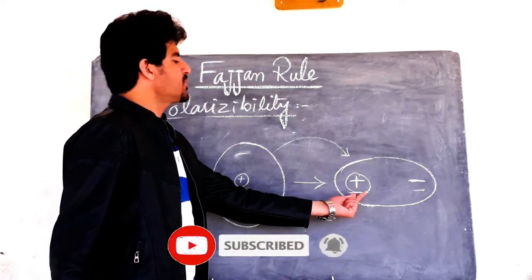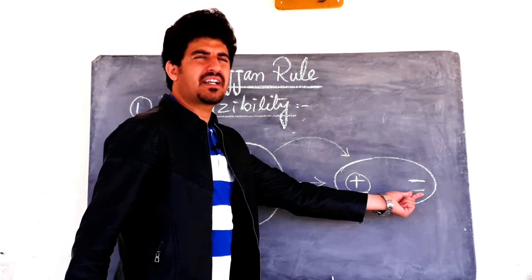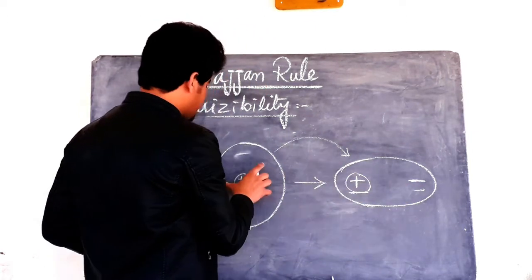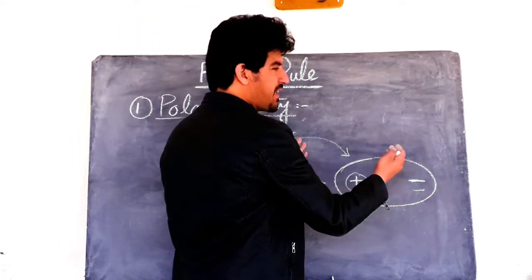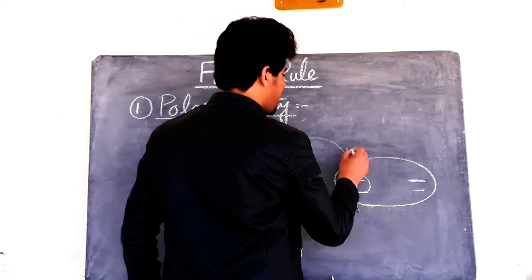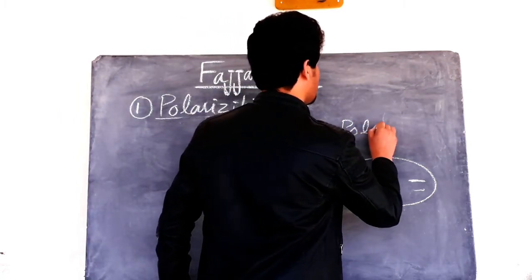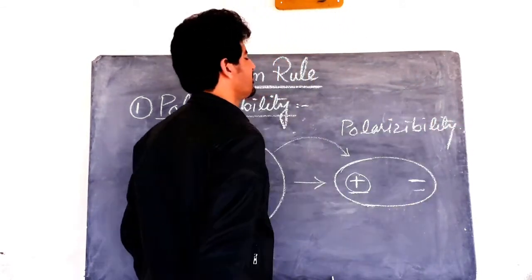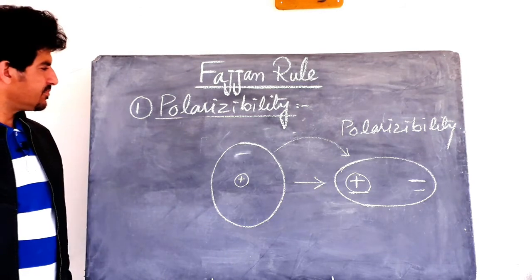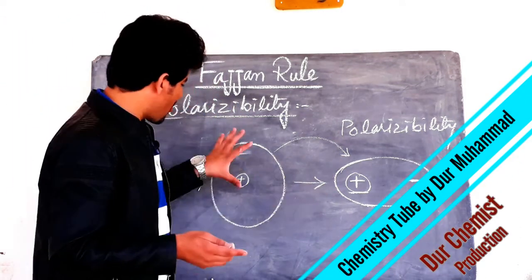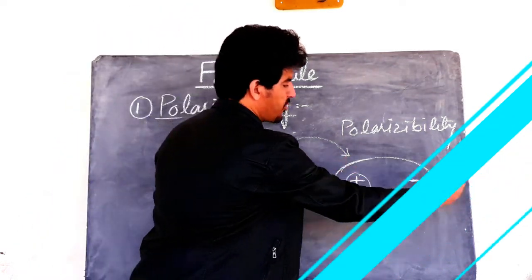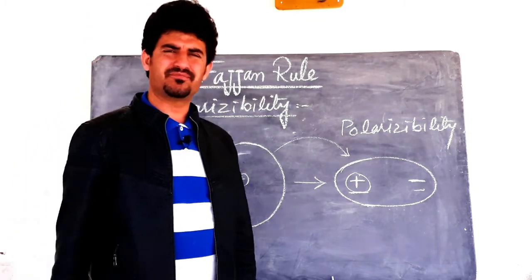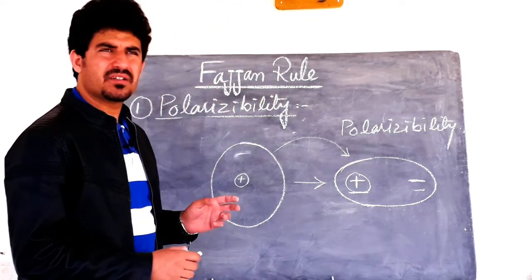The formation of a positive charge pool and a negative charge pool on a species — that is, the appearance of charges, the separation of charge, bringing positive and negative poles on a species — this property is called polarizability. After understanding polarizability, we move towards polarizing power.